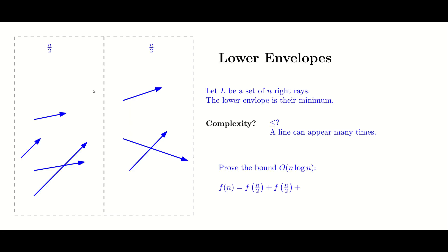The proof goes as follows. We divide the set of rays into two sets: the n/2 rays whose starting point lies to the left of a dividing line, and the n/2 rays whose starting vertex lies to the right of the dividing line. We call these the left section and the right section.